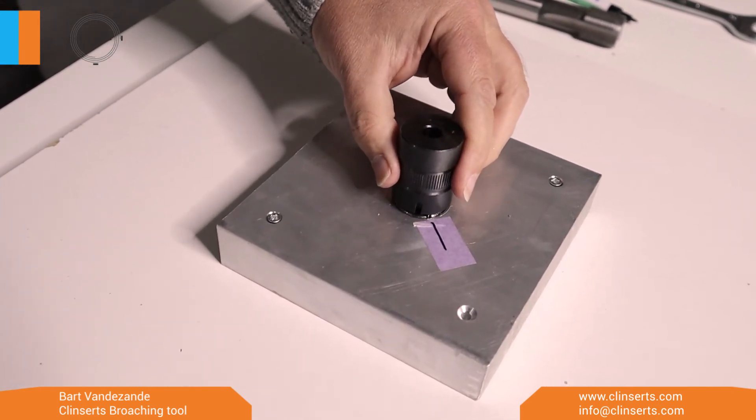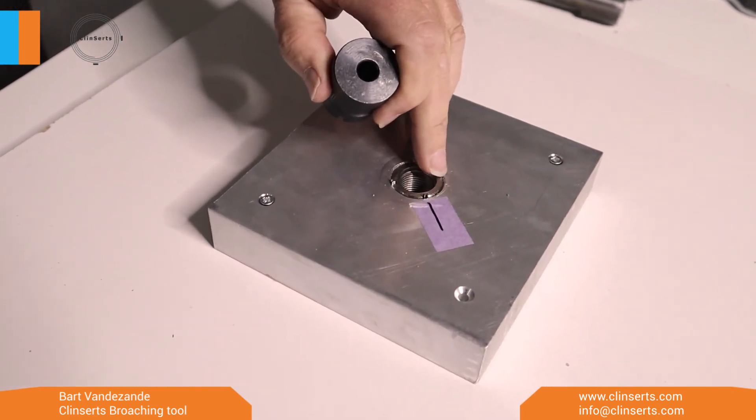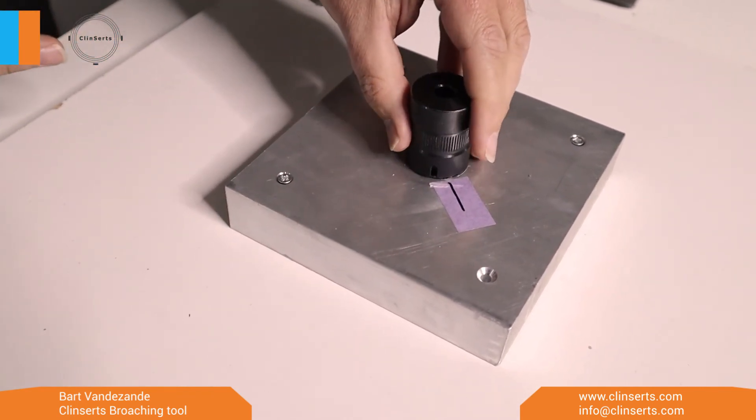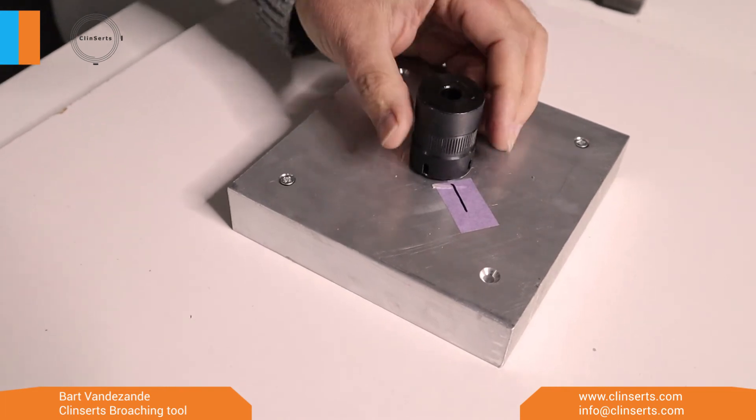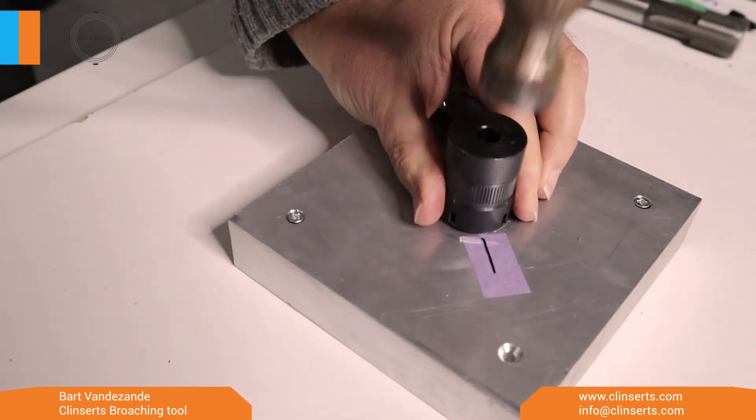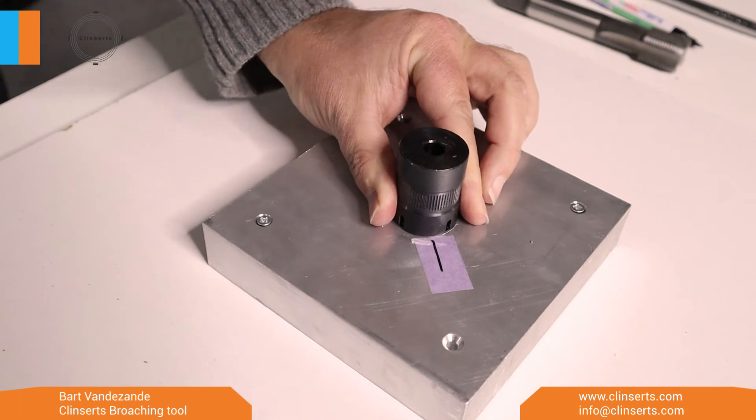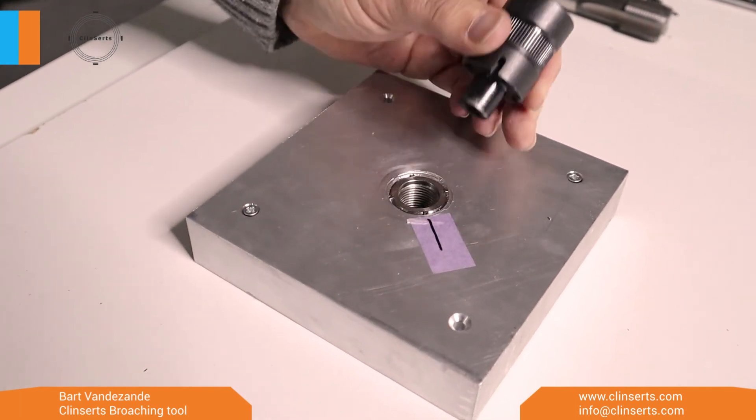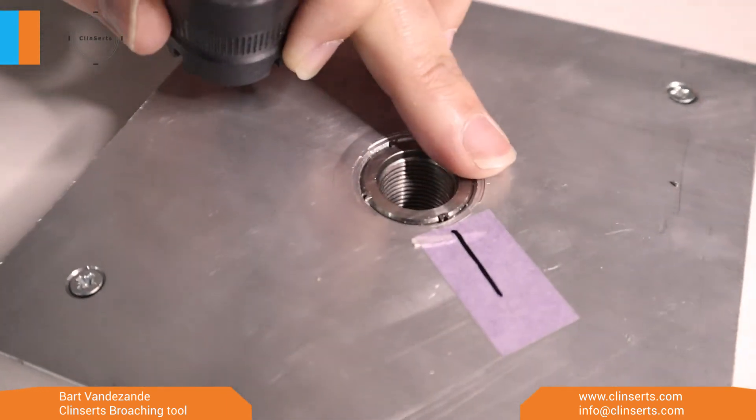Okay, now you see that the clints are not fully in because they were supported by the notches. So instead of using the notches, twist the tool a little bit and now give it another bam. And you see they are perfectly installed.